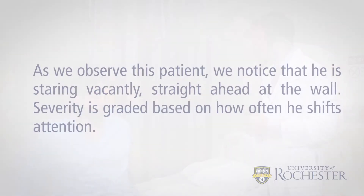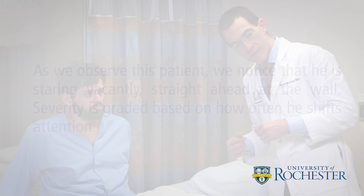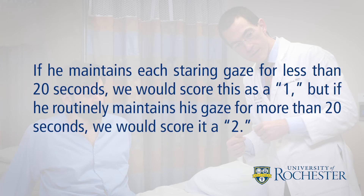As we observe this patient, we notice that he is staring vacantly, straight ahead at the wall. Severity is graded based on how often he shifts attention. If he maintains each staring gaze for less than 20 seconds, we would score this as a 1. But if he routinely maintains his gaze for more than 20 seconds, we would score it a 2.